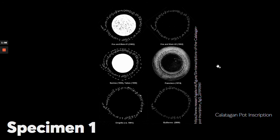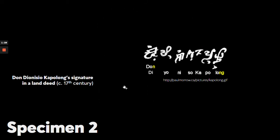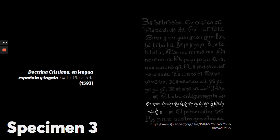The first Philippine script specimen is the Kalatagan pot inscription. According to research, it has been shown to be something like a prayer pot, meant to be read by a shaman. The second specimen shows Don Dionisio Capulong's signature for a land deed. The third specimen shows a first printout of Baybayin, dated 1593.